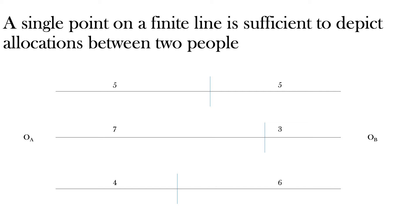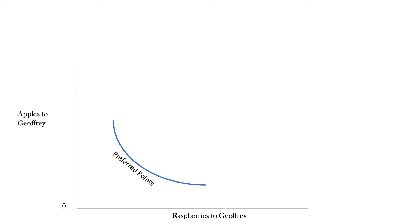Your normal indifference curve looks like this. Jeffrey is one of the parties in this example and likes both apples and raspberries. His preferred points are, since they're both goods, more of either or both makes Jeffrey happier. He has one allocation point — the amount that he has of each good.